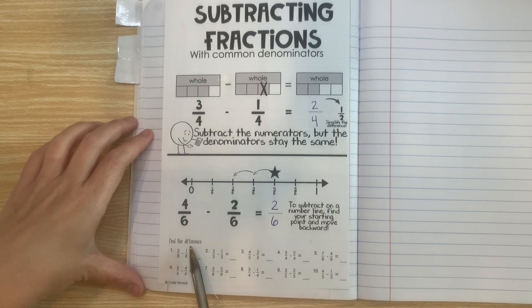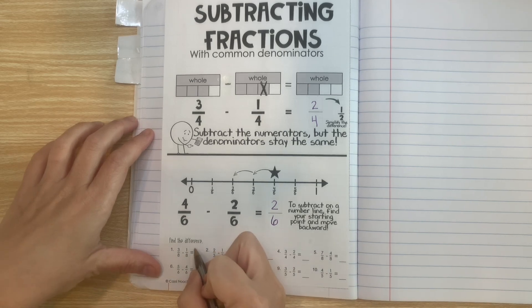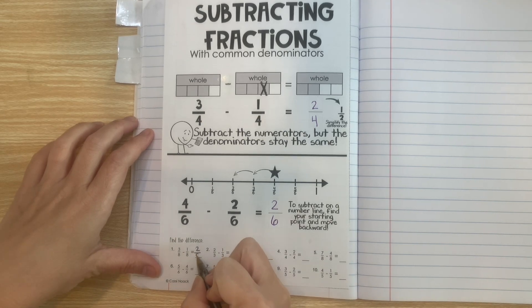Here are a set of practice problems. We have 3 eighths minus 1 eighth. So let's say 3 minus 1 is 2 and the denominator doesn't change.